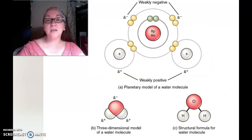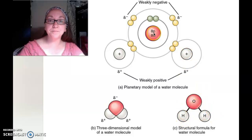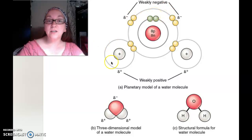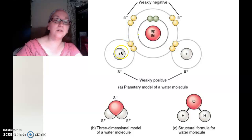Water is probably the best example of a polar covalent bond. Remember water is H2O. Oxygen is in the center with a hydrogen on each side. The oxygen is weakly negative — it has more of those electrons and a higher electronegativity, so it keeps the electrons more on its side. Hydrogen is a positive ion, so it has a weakly positive end. When they join, there's just a little bit of a pull where the oxygen pulls a little bit more negative and the hydrogen pulls a little bit more positive.